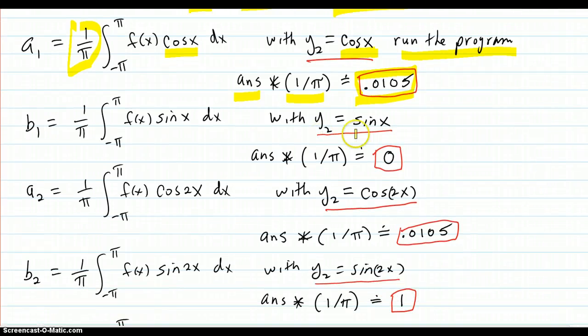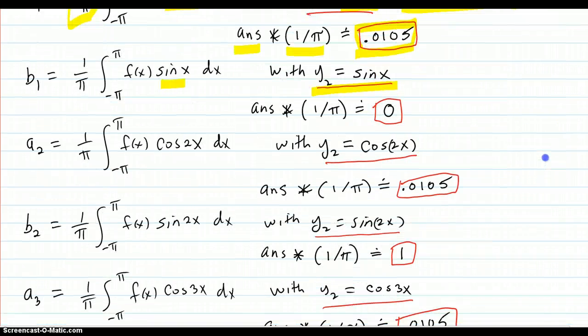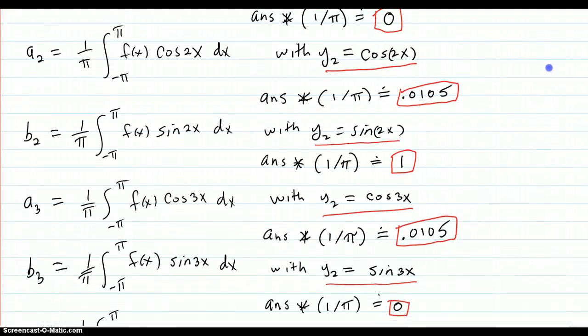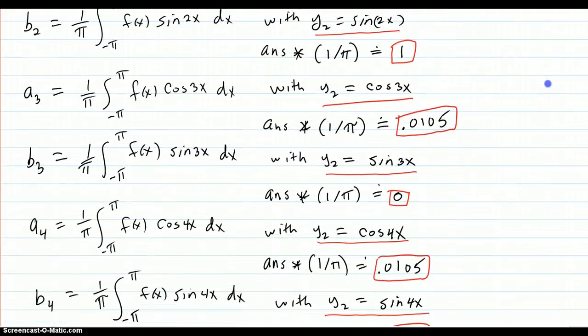Keep on going like that. As you can see, b1 has the sine in there. So you're changing the y2 to sine. You run it. You get that e negative 15 type of thing. That means it's zero. So you get that. And you keep on going. I'm just going to scroll here. Keep on getting those coefficients the same way.